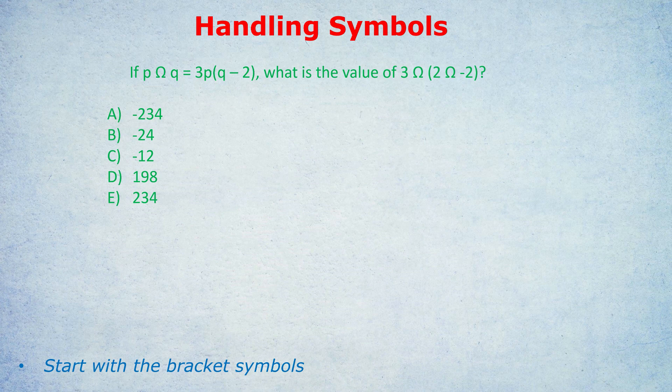We start with 2 symbol (-2). But first, the instructions: what do we do with our left value and right value, our p and q? We do three times the left value, then in brackets, the right value take away two. So p is our left value, q is our right value. We do 3 times the left value, times in brackets, the right value take away two.